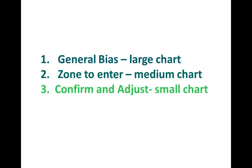Once you have the general zone, you want to confirm and adjust that zone as the market trades closer and closer. This is where the small chart comes in — I go as low as the 1-minute chart once I have the zone and the bias intact. If you can't confirm and adjust, you can do different strategies — maybe get in on one contract and add two more. The idea is to get you thinking in terms of the bigger picture and zooming in.